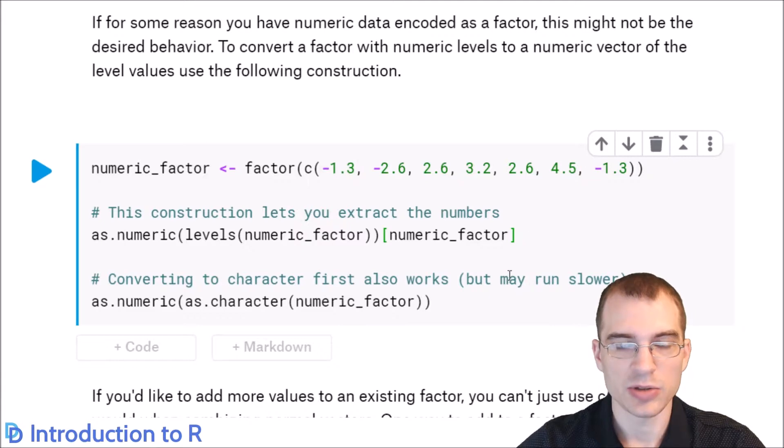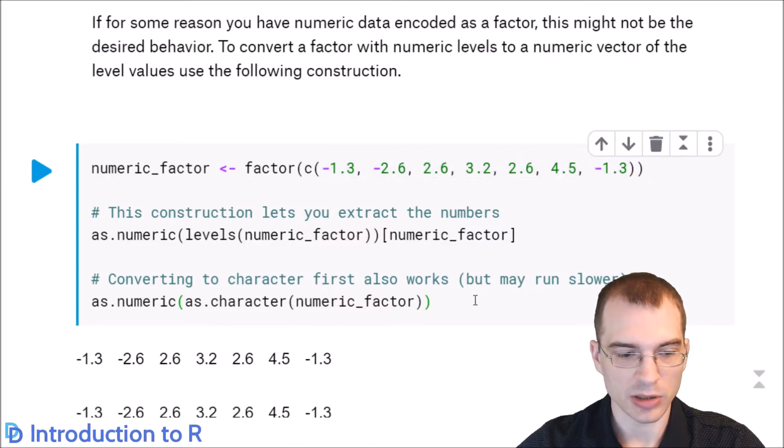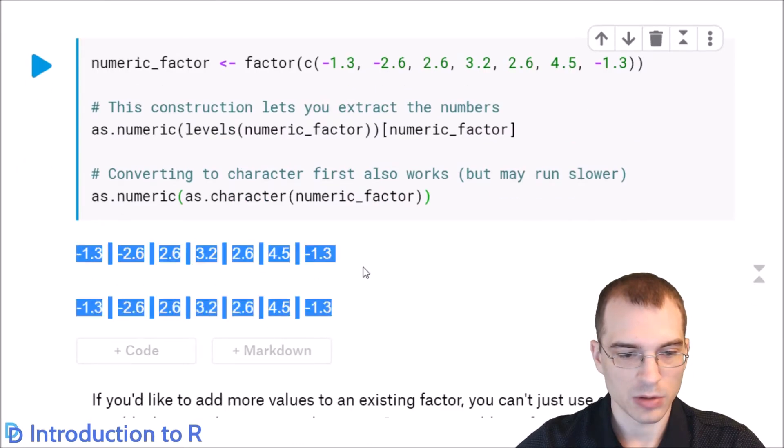Another way to do this is actually to first use as.character to convert all those numbers into their character representations. And then just use as.numeric on that. That also works. It's probably easier to understand than this, but it might run a little slower. So probably not going to matter in most applications. So this might work just fine. But we'll just run this and show that these both will get your original numeric values back here. There they are.